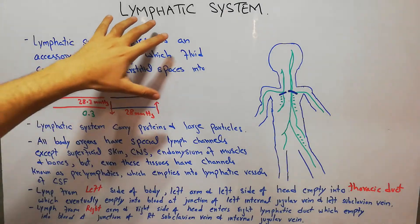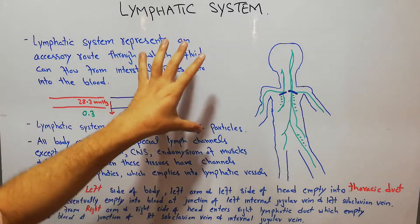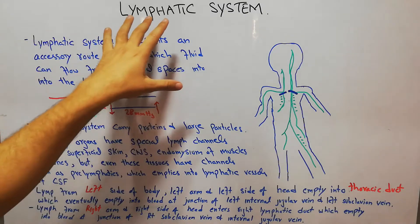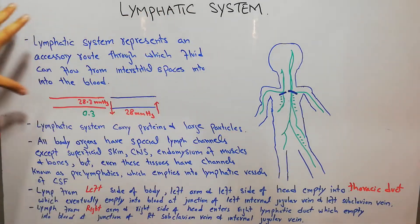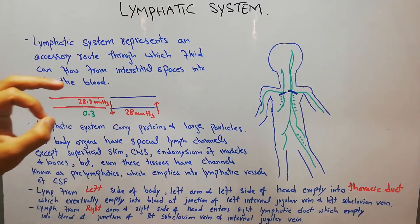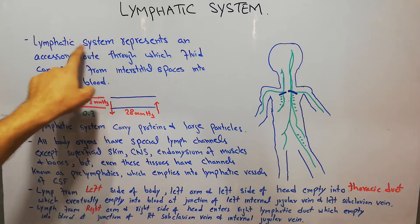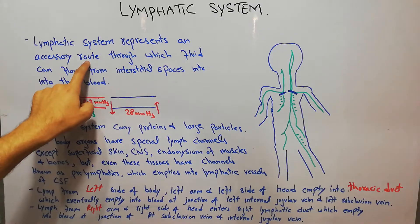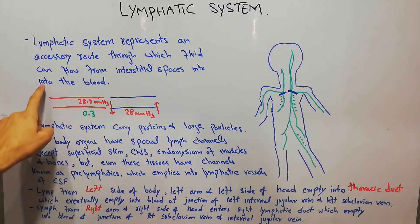Today we are going to start the lymphatic system. We have completely discussed the microcirculation, and today we begin the lymphatic system. It is going to be a simple, easy series of lectures. So basically, what is the lymphatic system? The lymphatic system is a system that represents an accessory route through which fluid can flow from interstitial spaces into the blood.